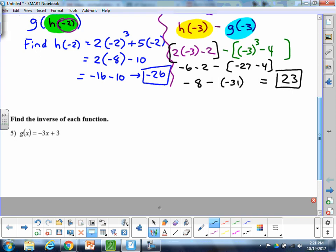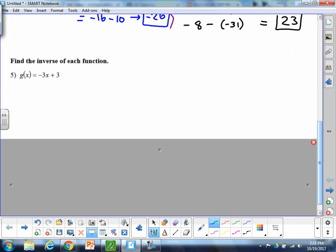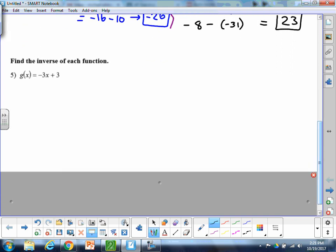All right, next thing we've got to talk about, finding inverses. So the idea of inverses, again, x and y are going to switch. So first off, just kind of recognize g of x is just basically saying y. So the original equation given is really just y equals negative 3x plus 3. Here's where we're going to switch the variables. I'm going to switch x and y. Just kind of rewrite it. So x equals negative 3y plus 3.